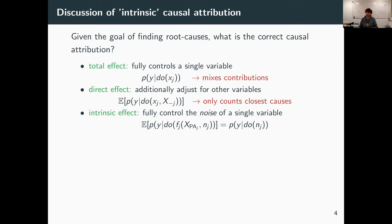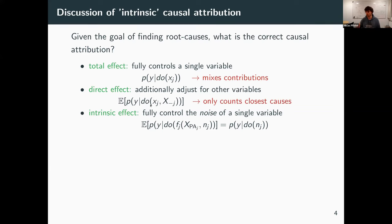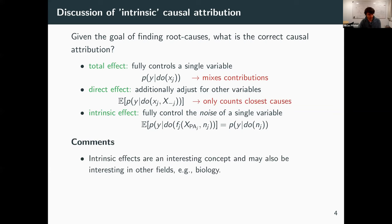Why are total and direct causal effects not the right thing for this propagation property? If you look at total causal effects, you're intervening also on deterministic propagating nodes, so they will get a certain contribution. The direct causal effect is even more off: it finds causes closest to what you're looking at, which is of course not what root cause analysis is interested in.